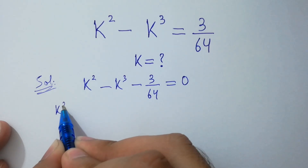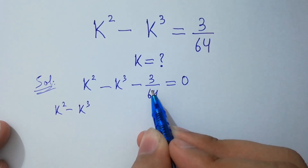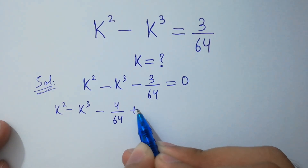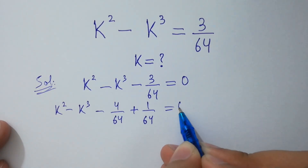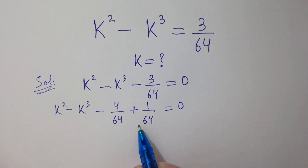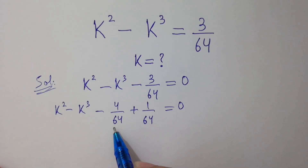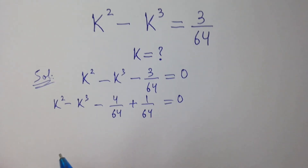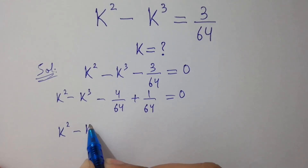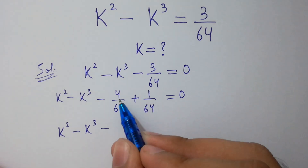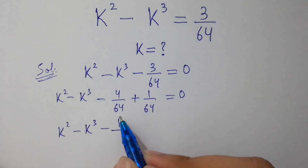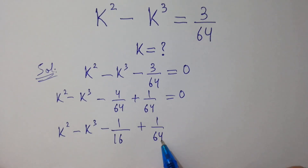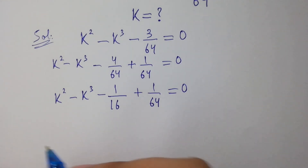I can consider minus 3 over 64 as minus 4 over 64 plus 1 over 64, which equals 0. I used these two terms because 1 over 64 is common, and minus 4 plus 1 equals minus 3. So k squared minus k cubed minus 4 times 1 over 4 times 16, which is 1 over 64, plus 1 over 64, equal to 0.